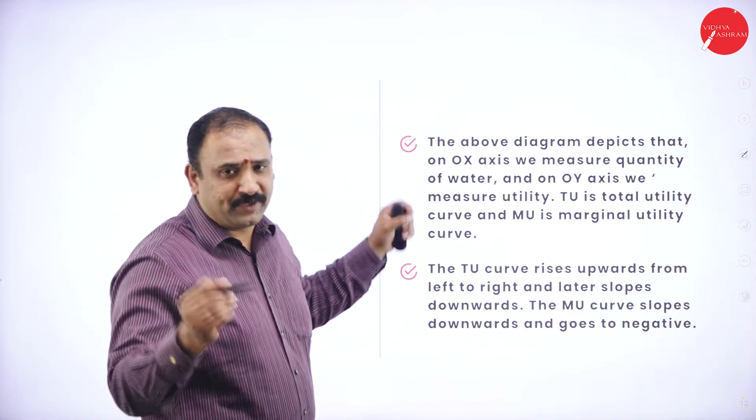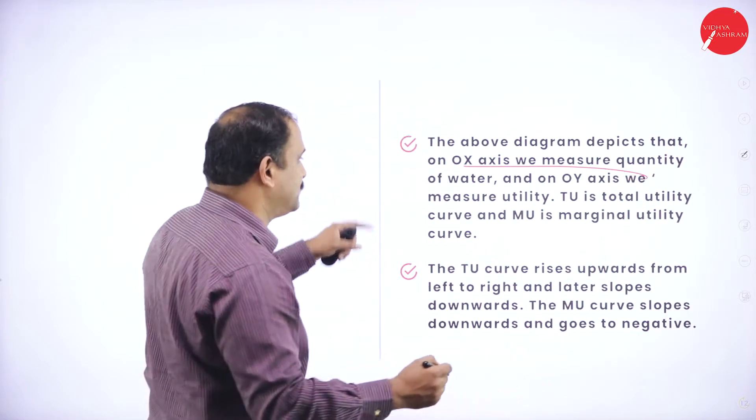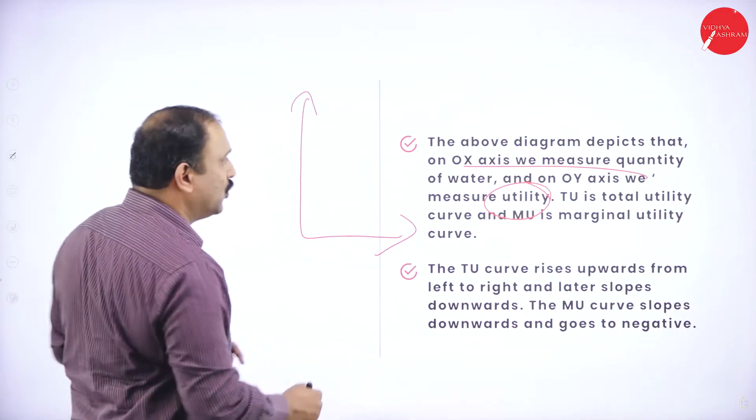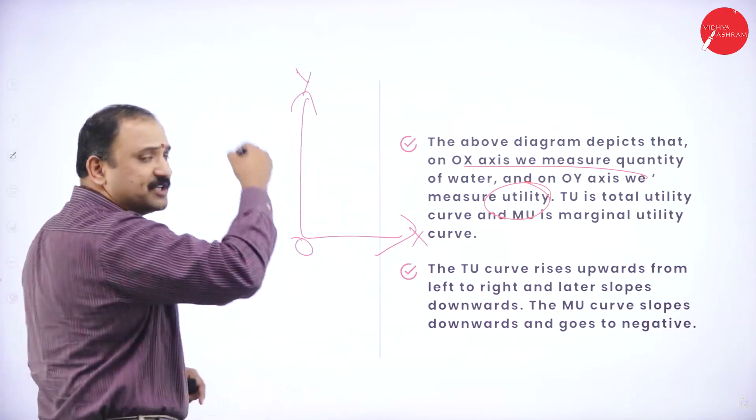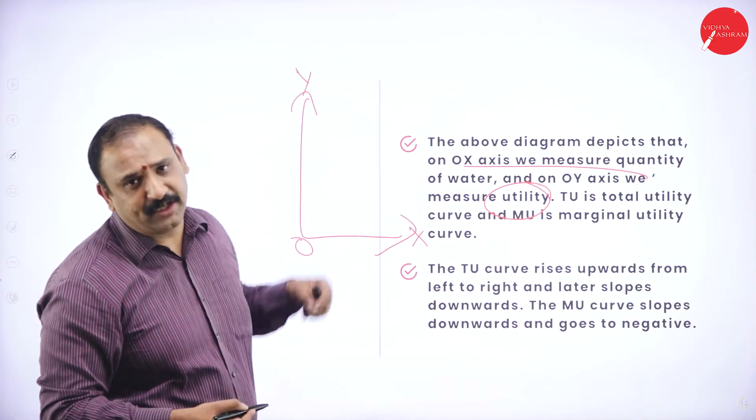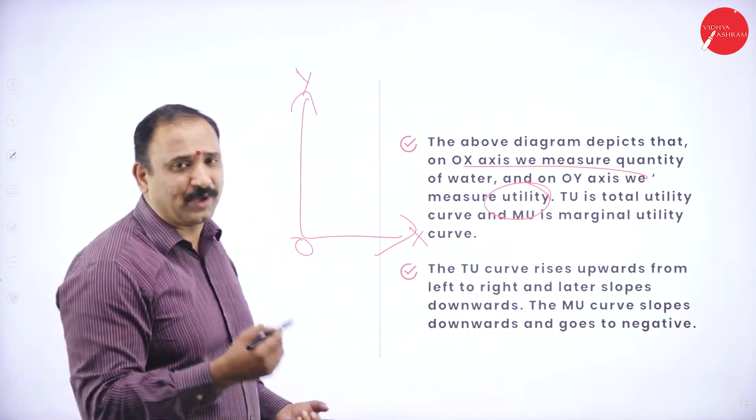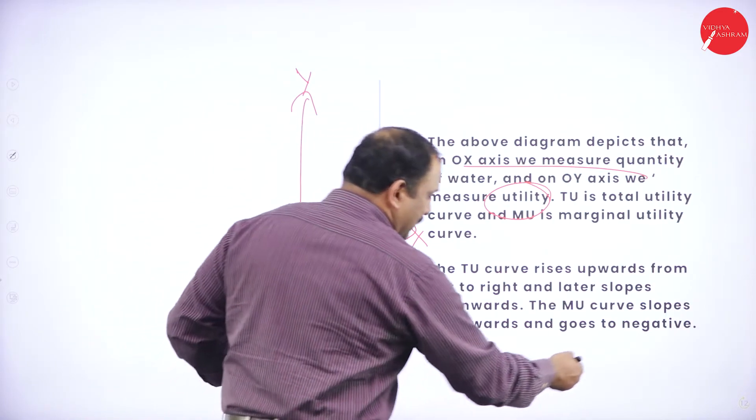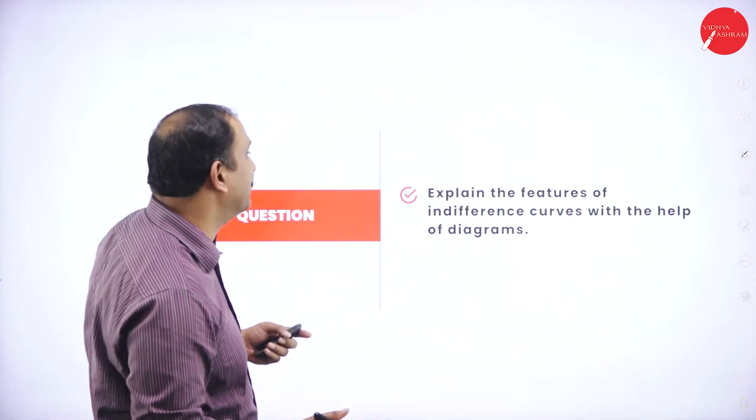The above diagram, OX was the axis where we measured the quantity, OY was where we were measuring the utility. The total utility curve is given by TU, marginal utility curve is given by MU. The TU rises upward, then it starts sloping downwards. The MU curve slopes downwards and goes further down to that of a negative scenario altogether.